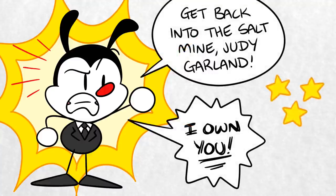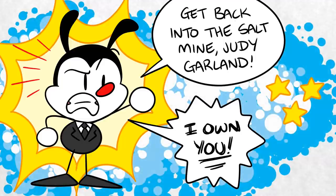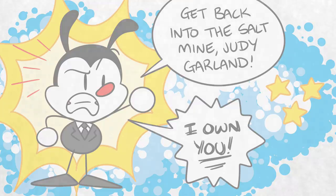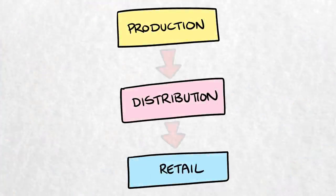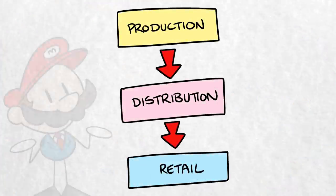This is known as vertical integration, and it's terrible for everyone except company owners. The studio system was ultimately abolished in 1948, following the United States vs. Paramount lawsuit. It was ruled that this level of vertical integration was too poisonous for the industry to be allowed.